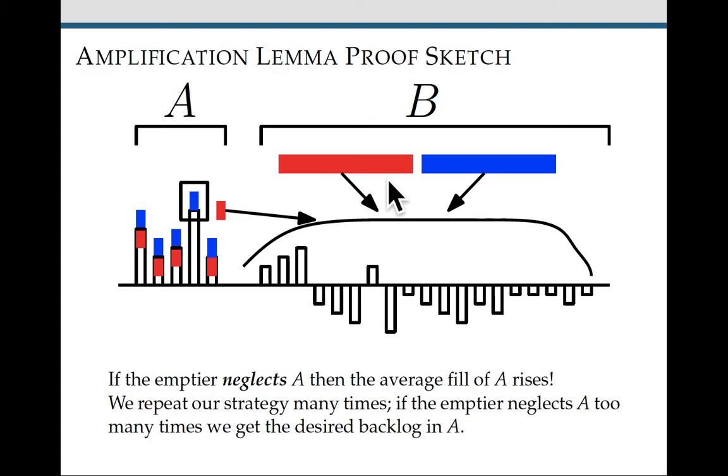But it turns out that either way we're going to get high average fill in a. So first of all, if the emptier neglects a in order to put more resources than the filler into b, then that means that there's some cup in a that had its fill increase, so hence the average fill of a increases.